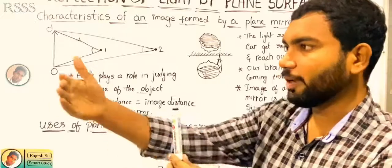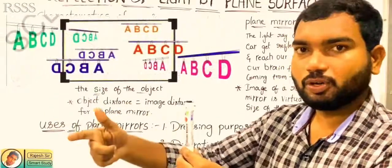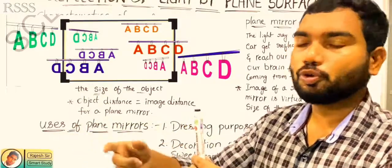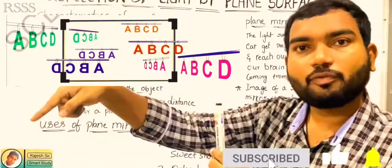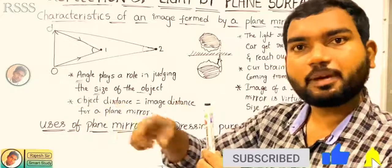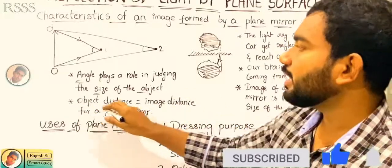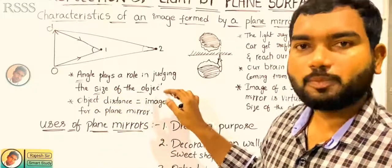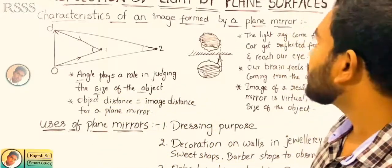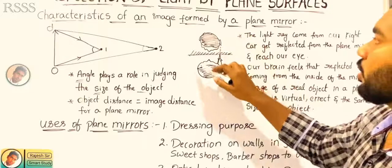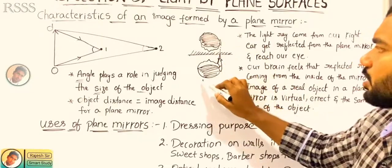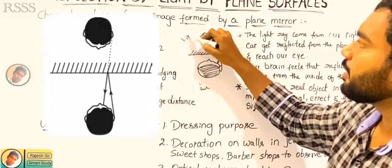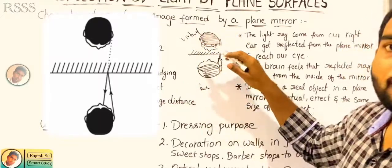If you measure the same distance, it is equal to the image. The size of the object may increase or decrease based on this. If we look at lateral inversion, we will show you a real image and a virtual image.